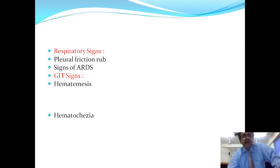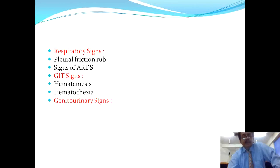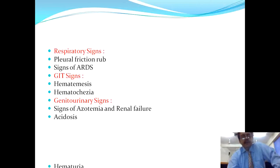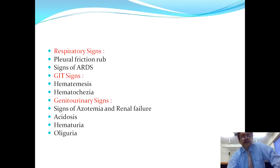In the genitourinary system, the patient can present with azotemia or florid renal failure, acidosis, hematuria, and oliguria. In female patients, metrorrhagia may also be found.